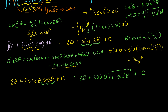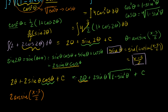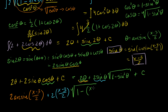Now we're at the home stretch — this problem was probably harder than you thought it was going to be. We know sine of theta equals (x minus 3) over 2, so let's make the reverse substitution. For the first term, 2 theta, we can't escape the arcsine: that's 2 times arcsine of (x minus 3) over 2. Then plus 2 times (x minus 3) over 2 — that's the sine of theta substitution — times the square root of 1 minus (x minus 3) over 2, all squared, plus C.